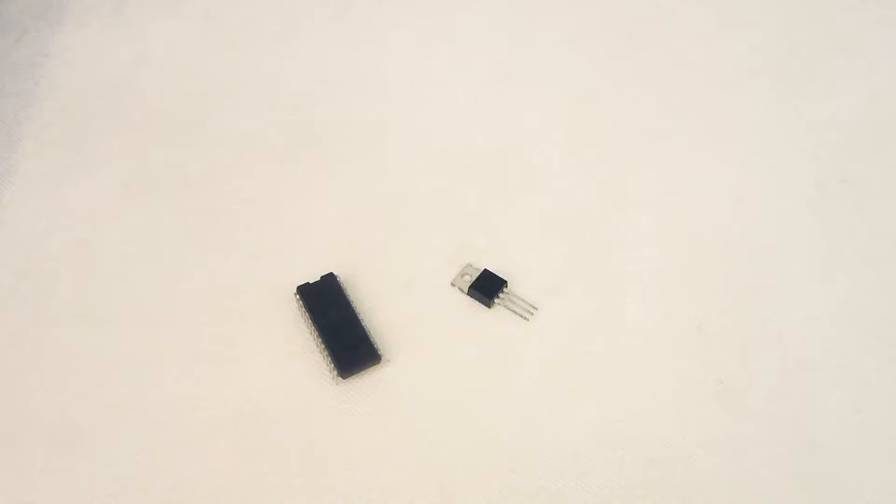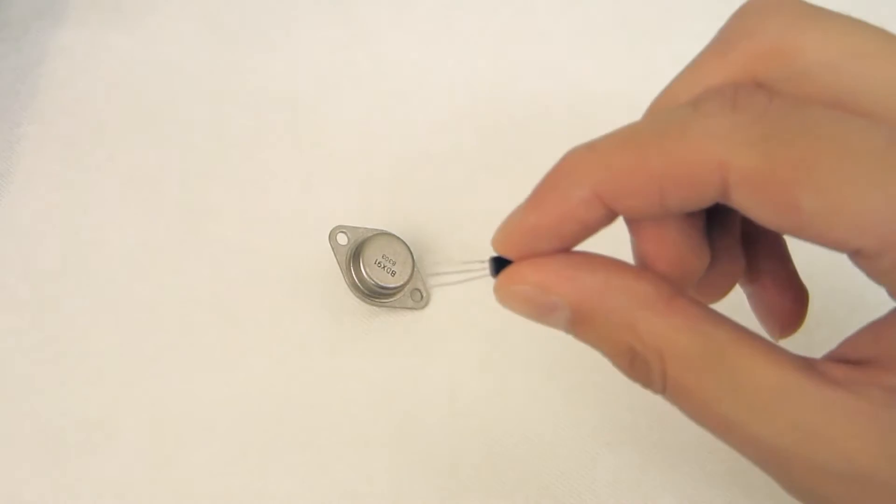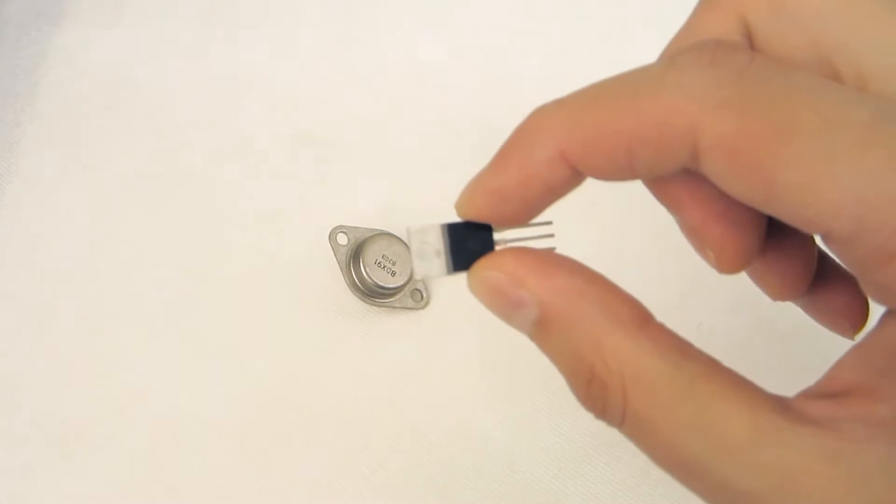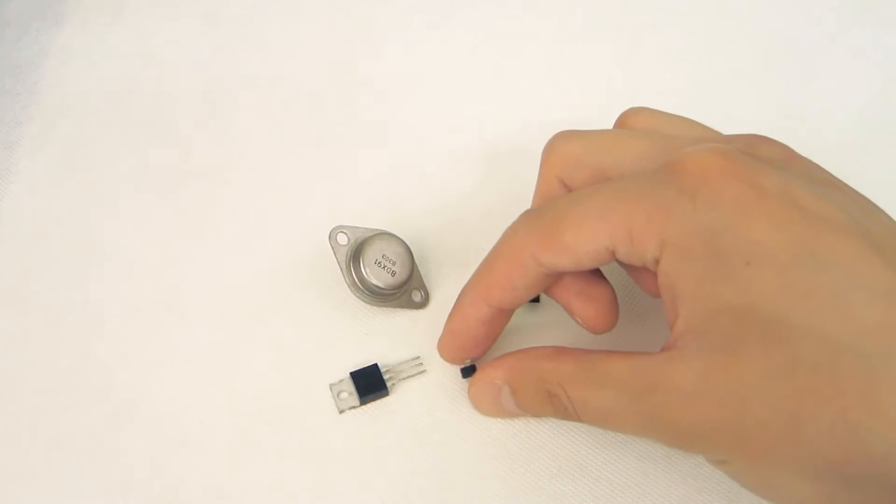Discrete transistors come in different cases or packages. Here is a selection of different cases. This is a TO3 case, a TO92 case, a TO222 case, and an SO223 case or package.